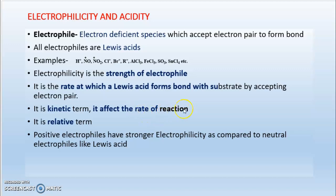Rate of reaction is how fast a reaction is going on. The rate of reaction is affected by electrophilicity. If the electrophilicity is higher, the rate of reaction will be higher. If the electrophilicity is lower, the rate of reaction will be lower. In this way, electrophilicity affects the rate of reaction.